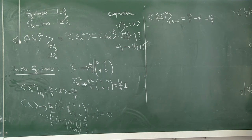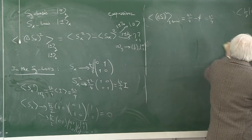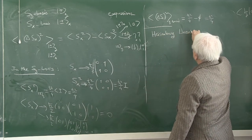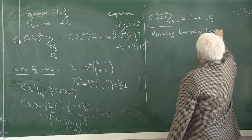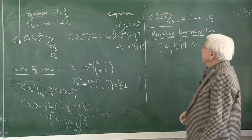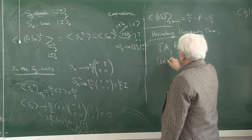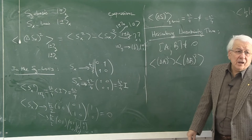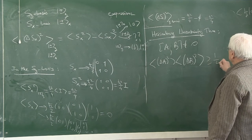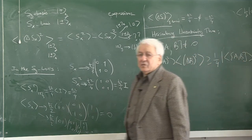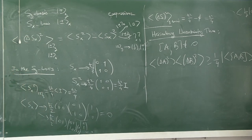Let me now state the theorem in its generality and then prove it step by step: the Heisenberg Uncertainty Theorem. If A and B are incompatible, then ⟨(ΔA)²⟩·⟨(ΔB)²⟩ ≥ ¼|⟨[A, B]⟩|². That's the statement of the Heisenberg Uncertainty relationship.